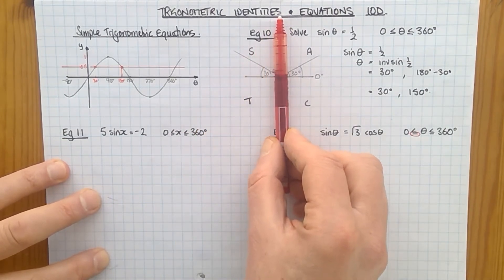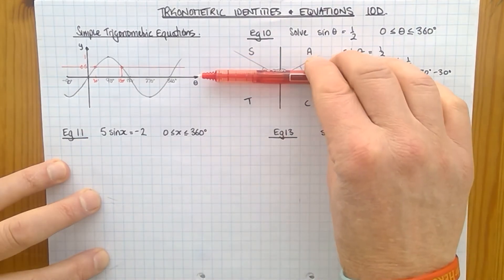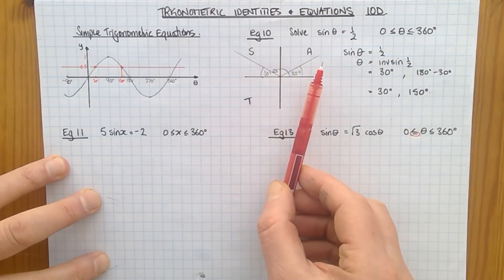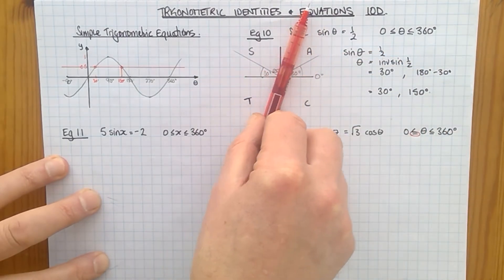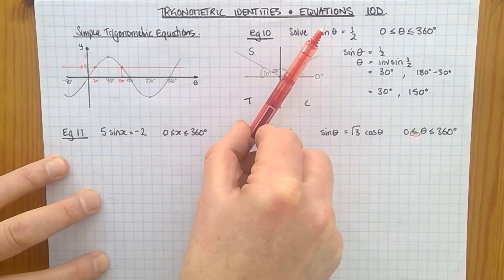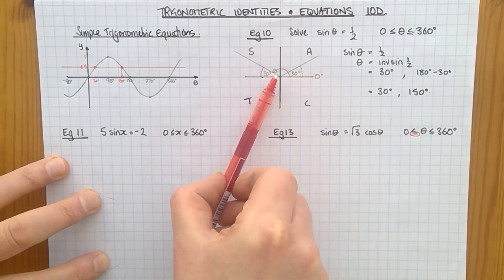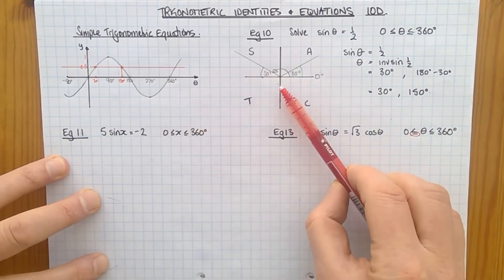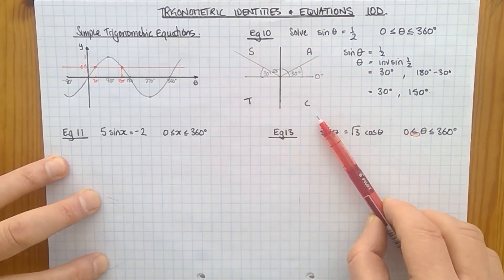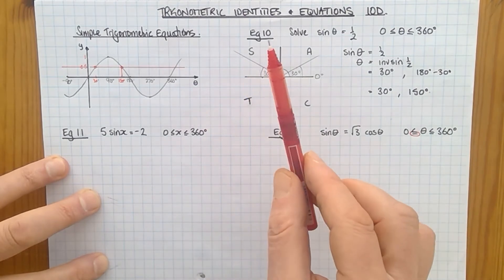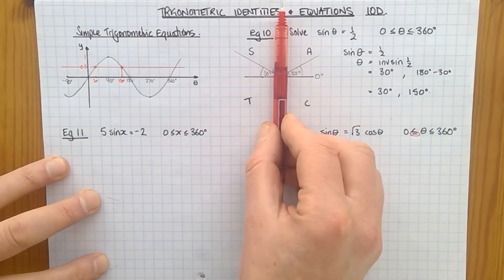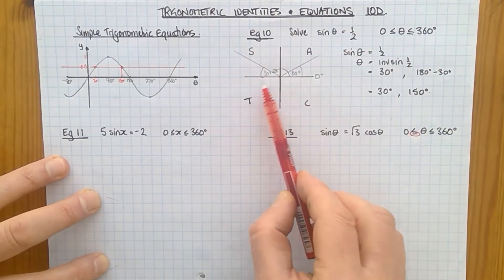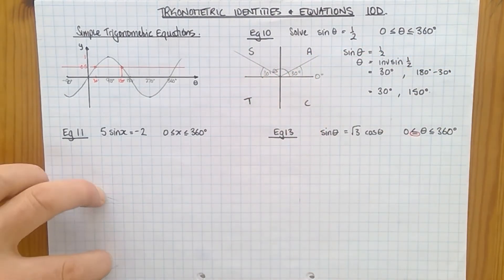For cos, it reflects in the x-axis. And for tan, it just rotates 180 degrees. So if you've got a primary value there, the other primary value is here. If you've got a primary value here, then the other primary value for tan is down this side. So just go through that again. Sine reflects in the y-axis. Cosine reflects in the x-axis. And tan rotates 180 degrees.